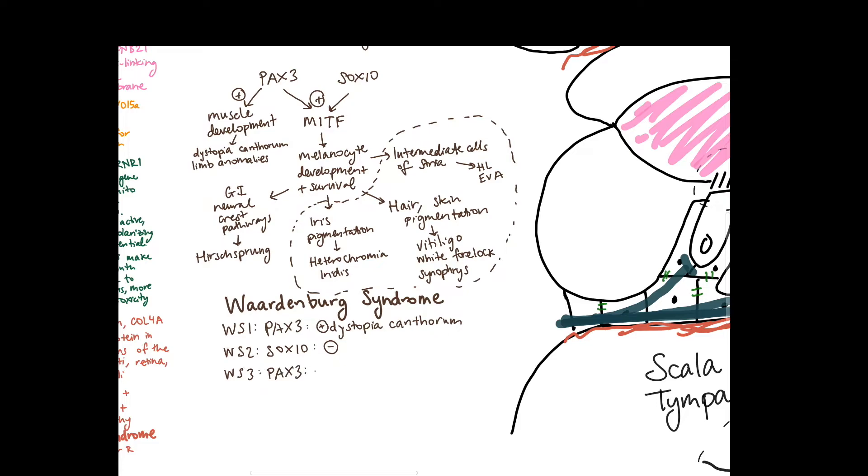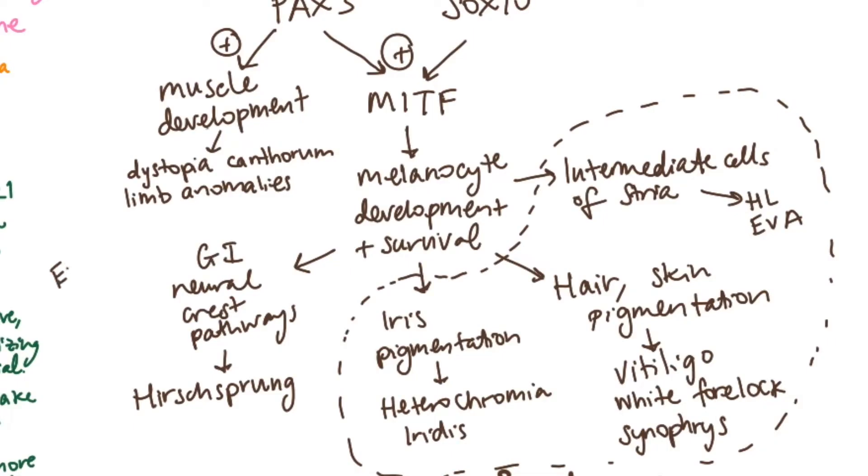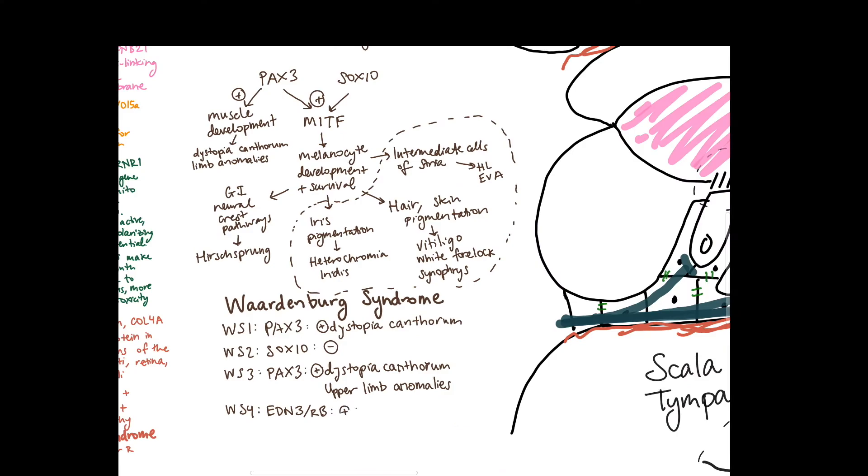Type 3 is again a different mutation in PAX3 that leads to both dystopia canthorum and upper limb anomalies. And then type 4 is a mutation in EDN3 and EDNRB which is the endothelin ligand and endothelin receptor. And these are really involved in stimulating the neural crest pathways of the GI tract and so patients with this phenotype get the original symptoms as well as Hirschsprung disease. This is extremely rare so you can remember that this one's autosomal recessive compared to the other three subtypes which are autosomal dominant.